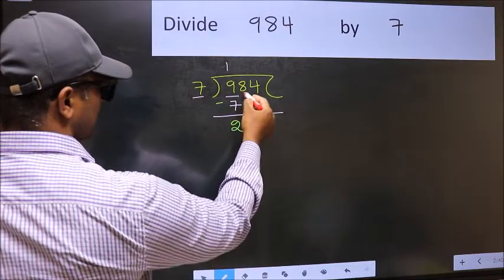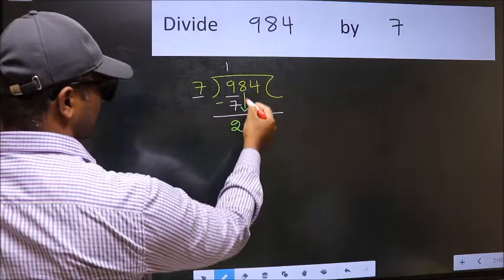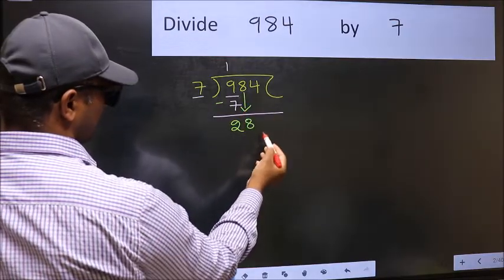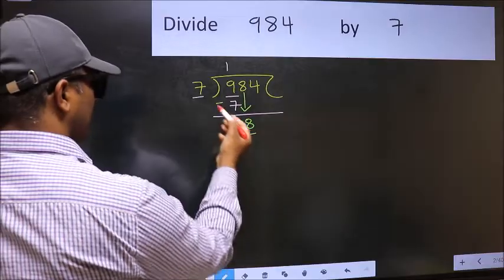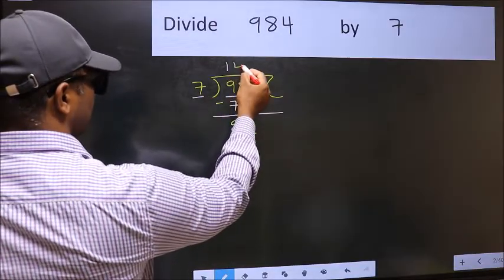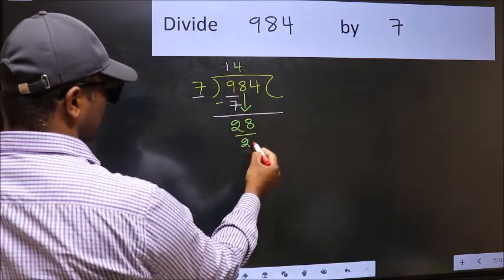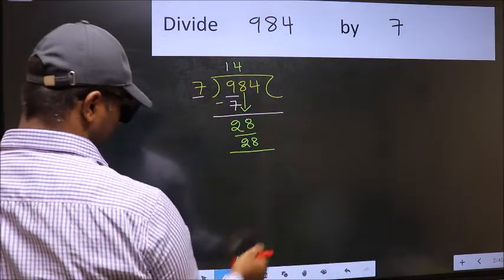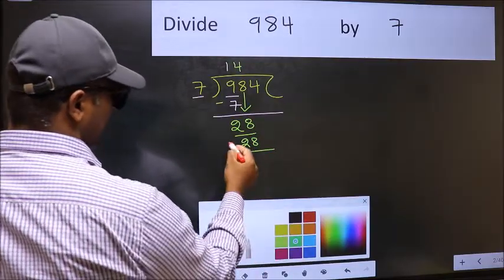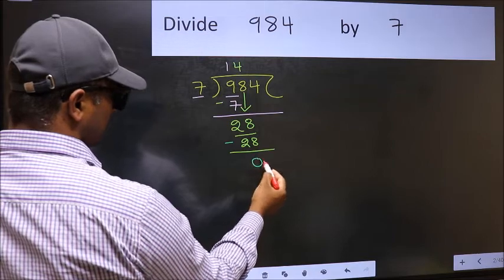After this, bring down the beside number. So 8 down. Now 28. When do we get 28 in 7 table? 7 fours, 28. Now you should subtract. 28 minus 28, 0.